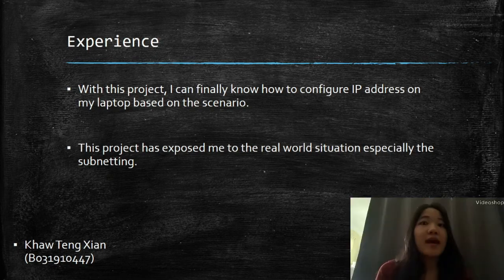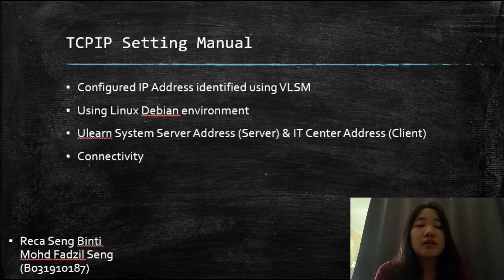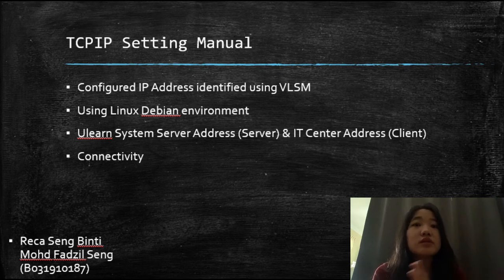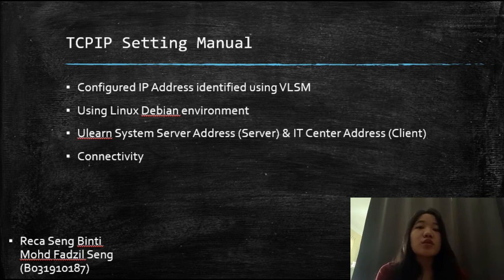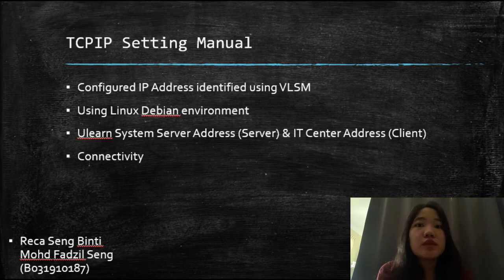Hi, I'm Rekha. So, I've configured IP address using the availability method on the Linux data environment. I've put the ULEARN server system address on the server side and the IT center address on the client side. In these screenshots, it shows that there is a transmission of packets from the server side to the client side. Thus, it proves that there is connectivity between them. That's all from me. Thank you.